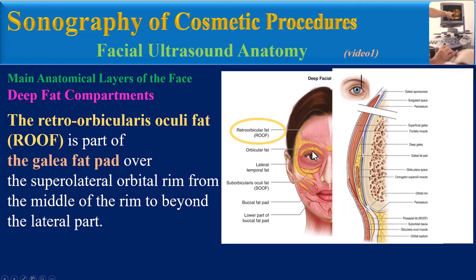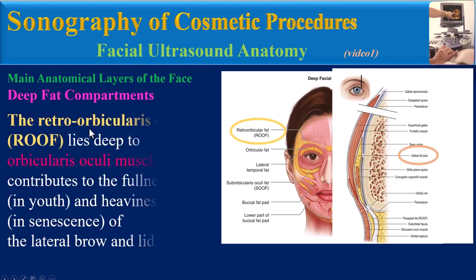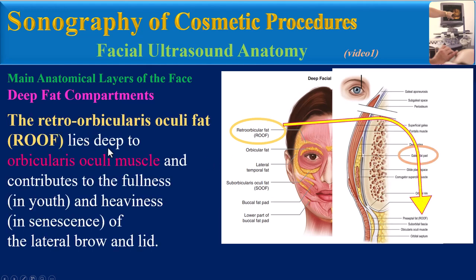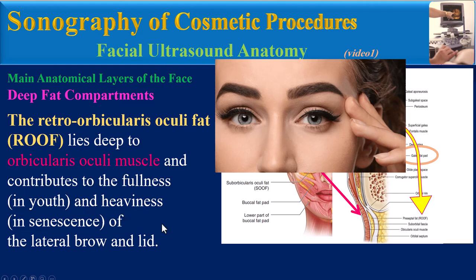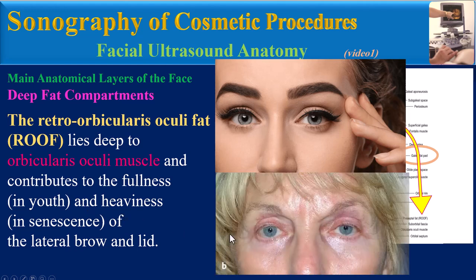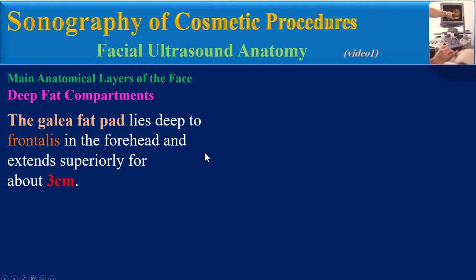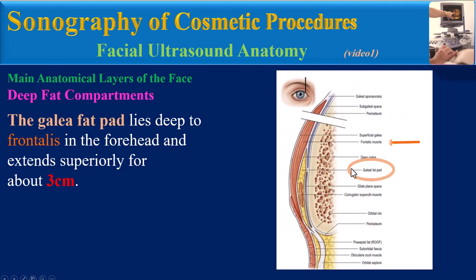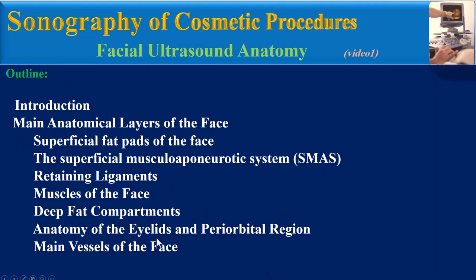The retro-orbicularis oculi fat, known as ROOF, is part of the galea fat pad over the supralateral orbital rim, from the middle of the rim to beyond the lateral part. The ROOF lies deep to the orbicularis oculi muscle and contributes to fullness in youth and heaviness in senescence of the lateral brow and lid. The galea fat pad lies deep to frontalis in the forehead and extends superiorly for about three centimeters.